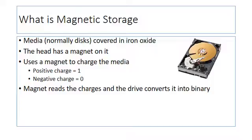The head, which is the little spindle pipe type part sticking out, has a magnet charged on it and it uses that magnet to charge the media. So if it records a positive charge, that's a one; a negative charge is a zero. That's how it stores everything as binary, which then in the grand scheme of things gets used by the computer.